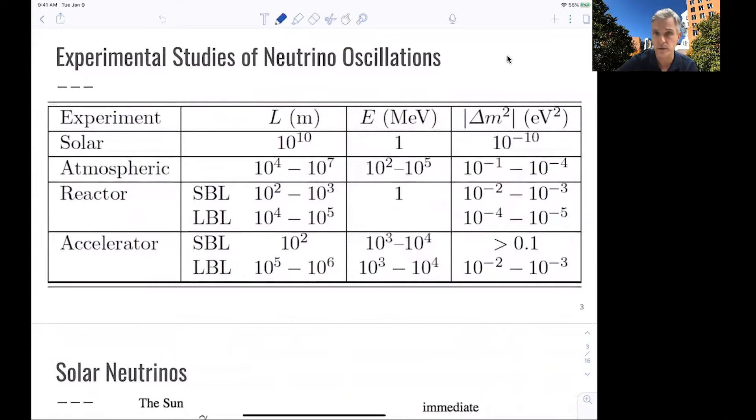So for the solar neutrinos, the distance between the Earth and the sun is pretty much fixed to first order. The energy of the neutrinos coming out is in the order of 1 MeV. We are going to look at a table. And so the mass range you can probe is 10 to the minus 10 in delta M square. For atmospheric neutrinos, they're produced in the upper atmosphere, 10 to the 4 to 10 to the 7 meters. Energies can range, have a large range, let's say, 10 to the 2 to 10 to the 5 MeV.